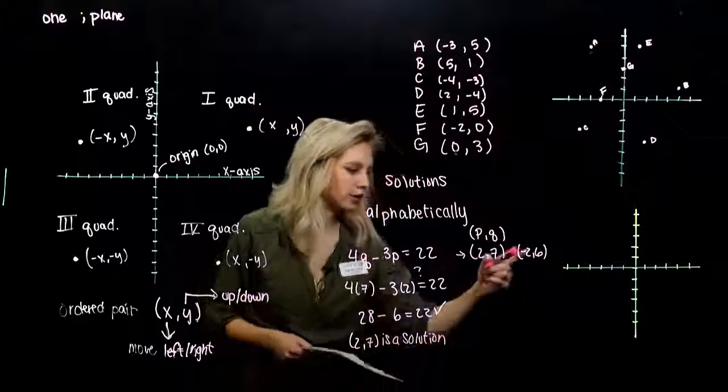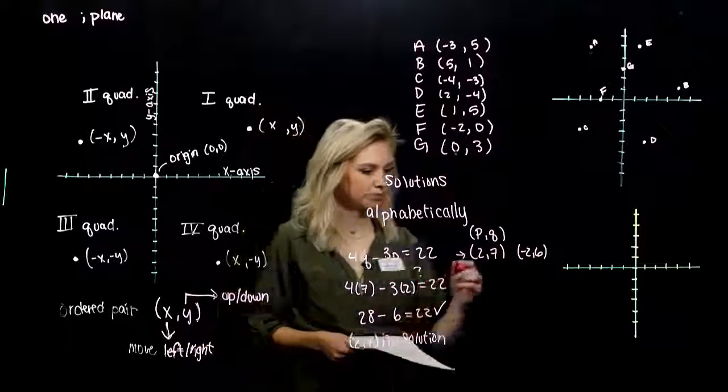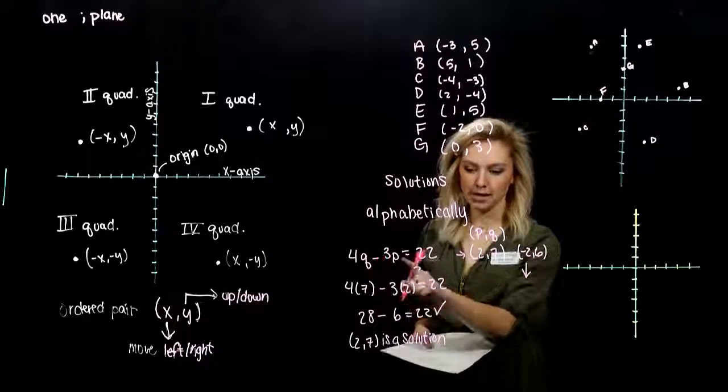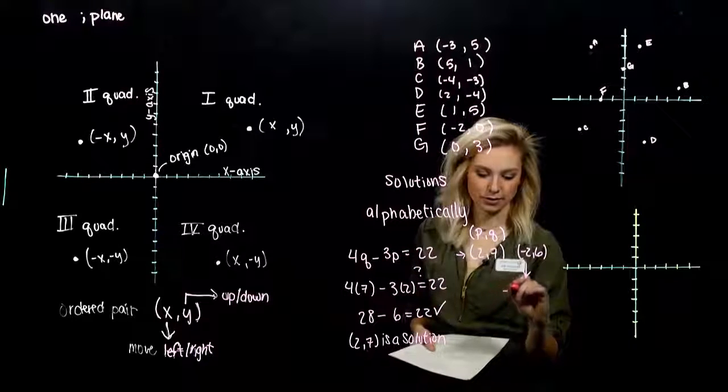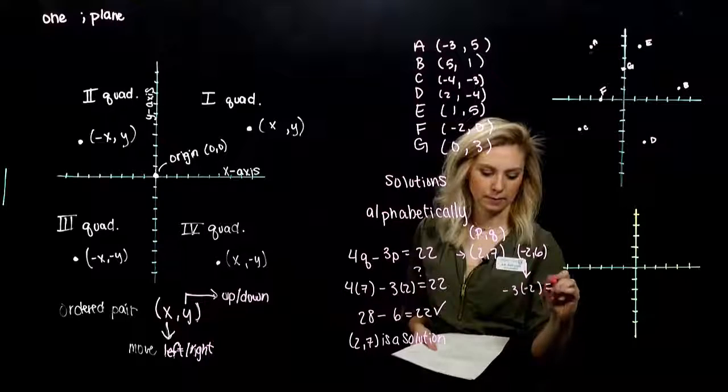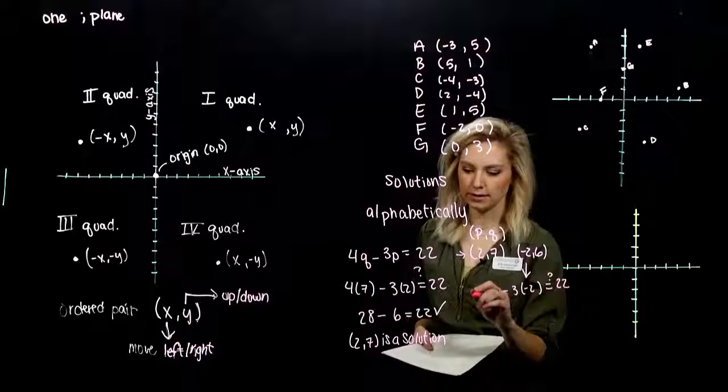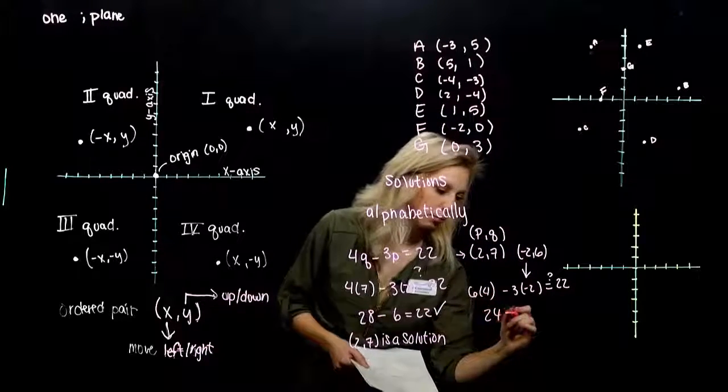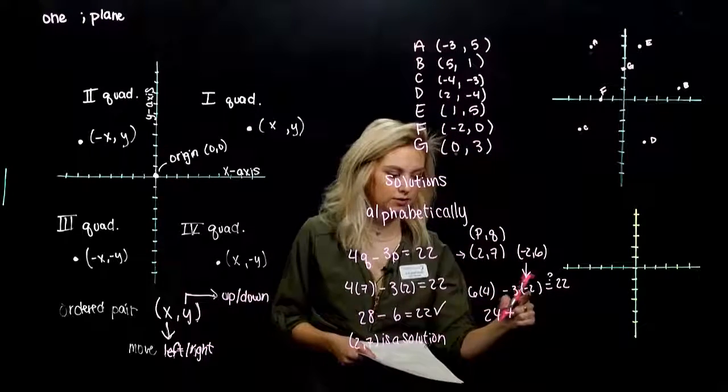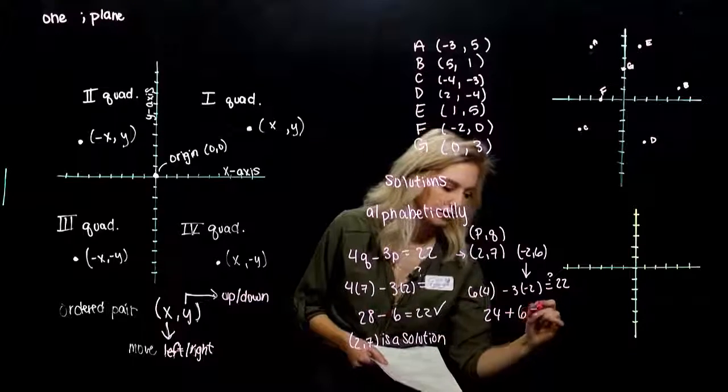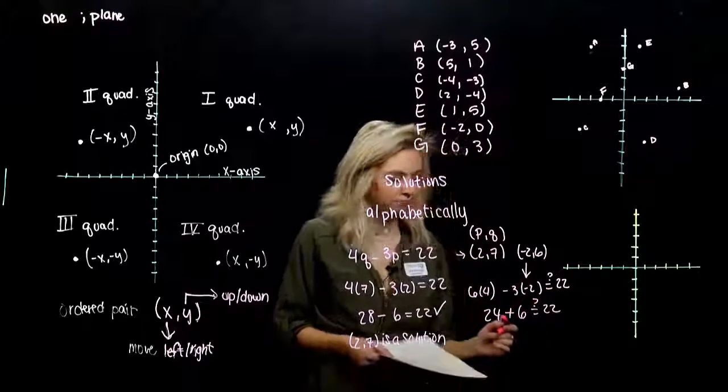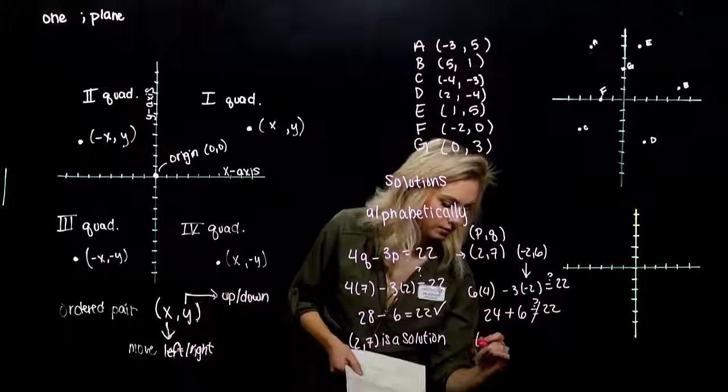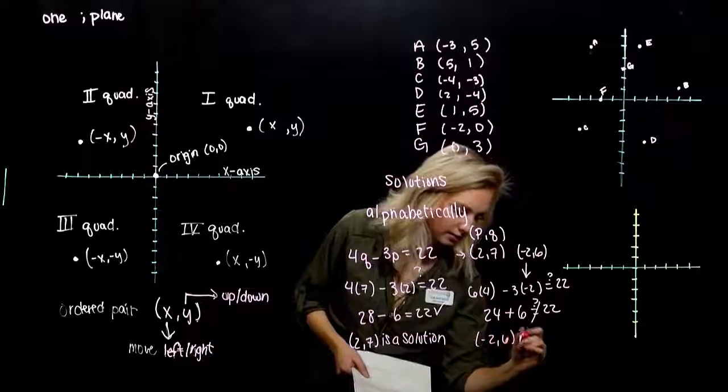Let's check the next one. Checking minus 2, 6 into our equation. P is minus 2 in this case. Q is 6. I'm looking at 24 plus 6, since we have minus times a minus. Does that equal 22? Too big. 30 does not equal 22, so this one is not a solution.